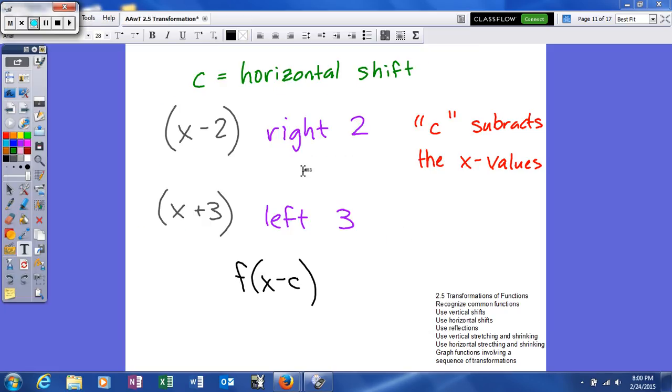Just like our vertical shifts don't actually change the shape of our graph, horizontal shifts don't change the shape of our graph either. Now, where d is your constant outside of your principal function, c is actually your constant inside your principal function.